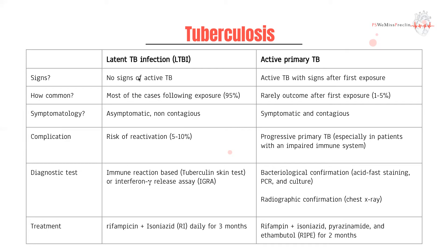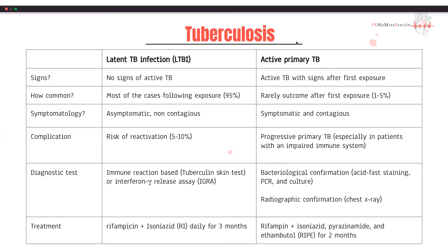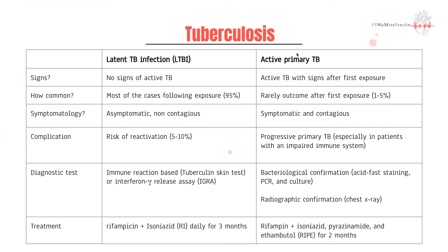With latent TB, you're going to have no signs and no symptoms. Most cases following the first exposure tend to fall under this category — it is actually very rare to develop active primary TB after first exposure. However, you can see that happen in people at significantly higher risk, such as immunocompromised groups, older people, and HIV-positive patients. In terms of complications, there is a risk of reactivation down the line — about 5 to 10% lifelong. With active primary TB, we worry that it might keep getting worse, which would be called progressive primary TB, more likely in patients with an impaired immune system.